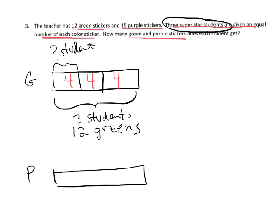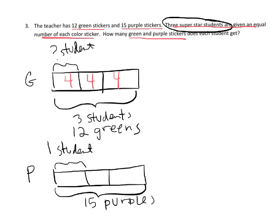We've got three students and now we have 15 purples. What does one student get? One student gets five purples. So one student receives four greens and five purples, and there's your answer.